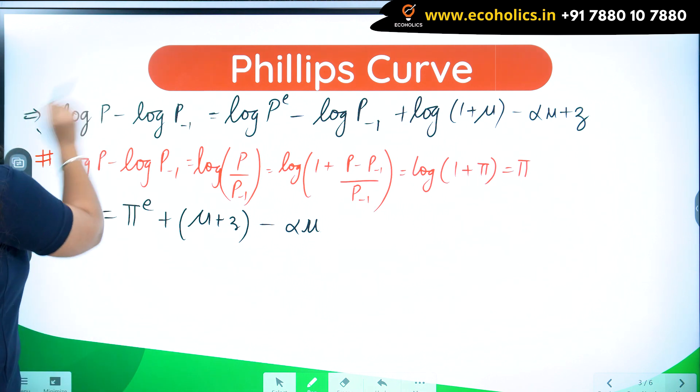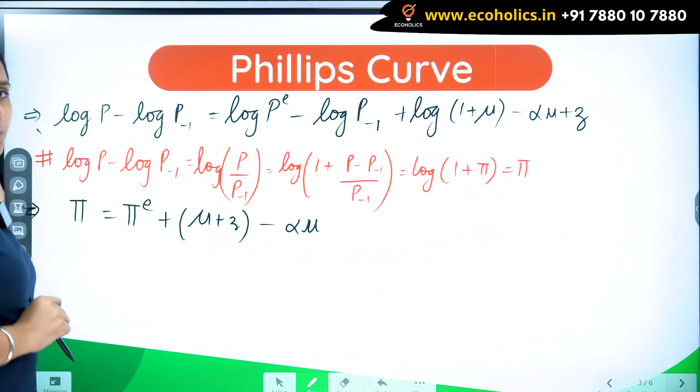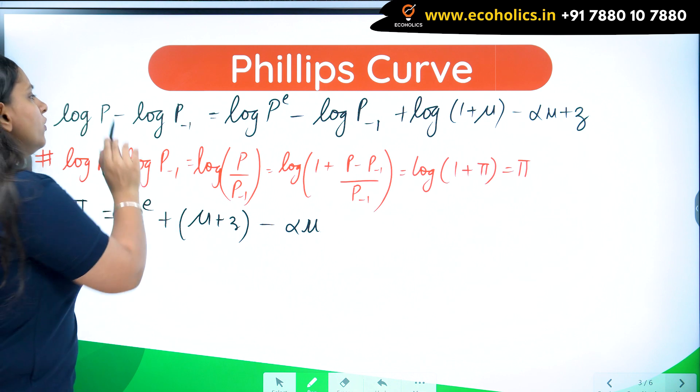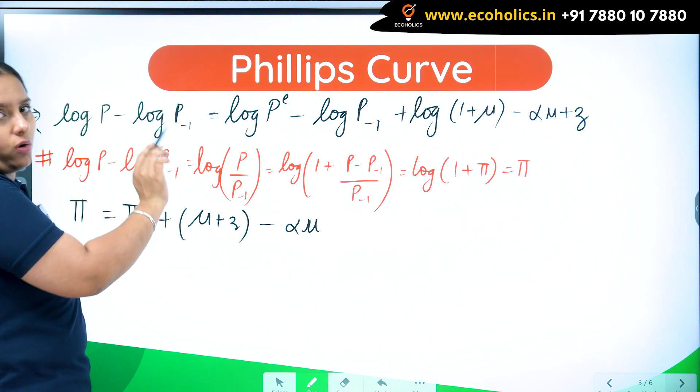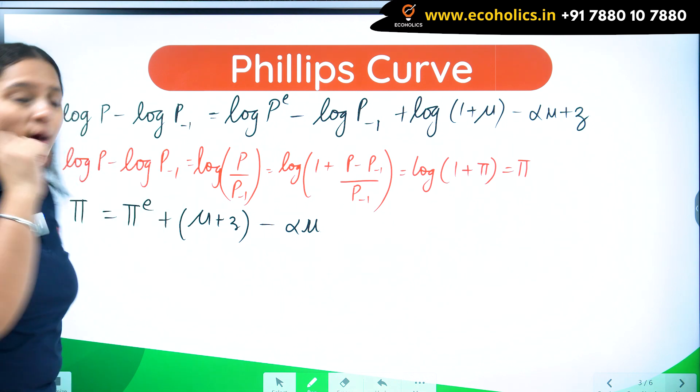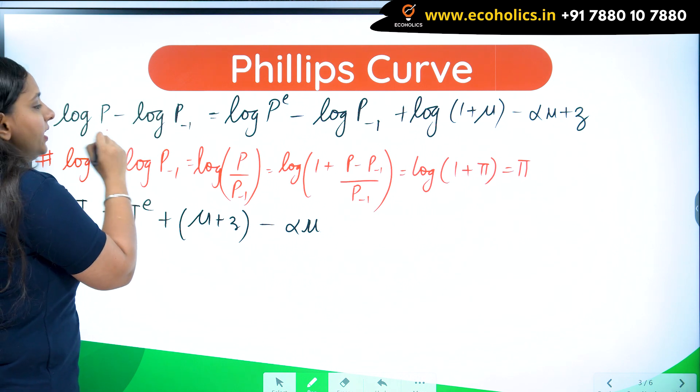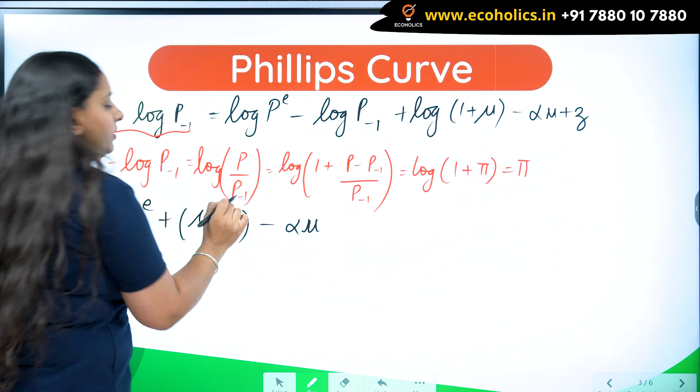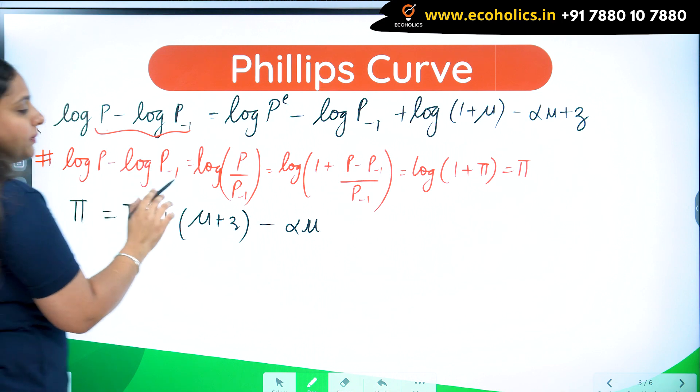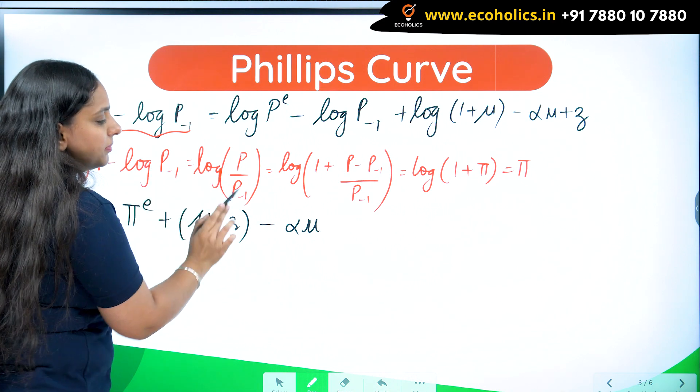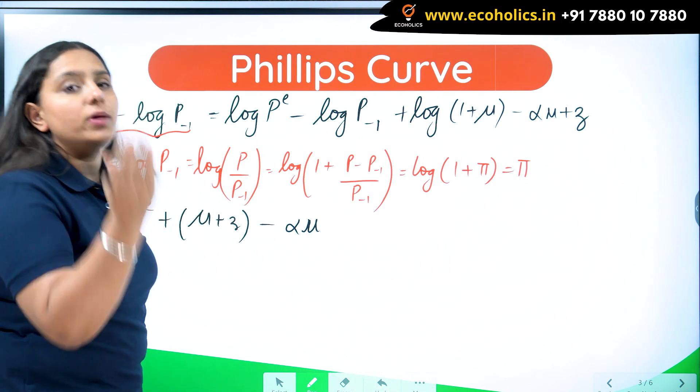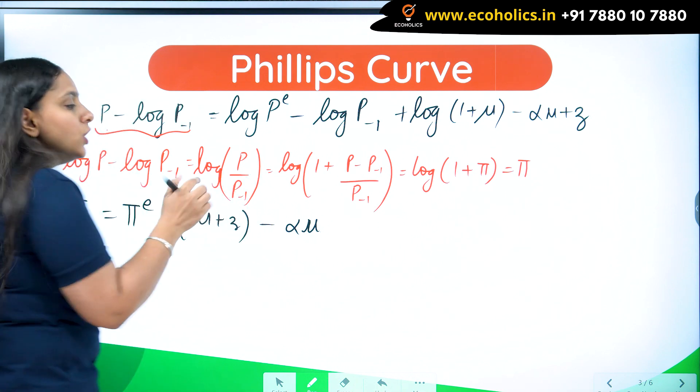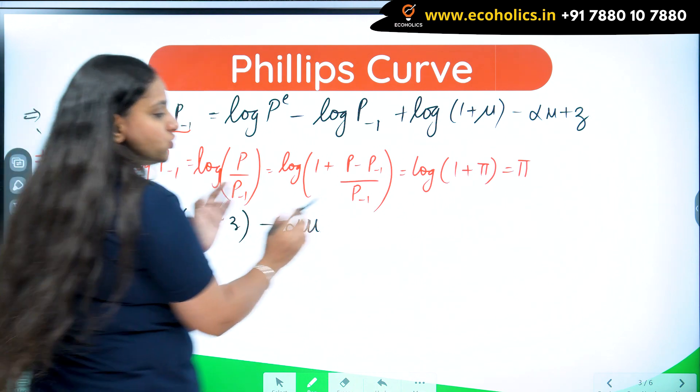How to solve for log P minus log P minus 1? Whenever we have subtraction in log, if I have to combine them, I have to write them in the divide. So log P minus log P minus 1 is like this. When the numbers are in divide and I open the log, they get subtracted.